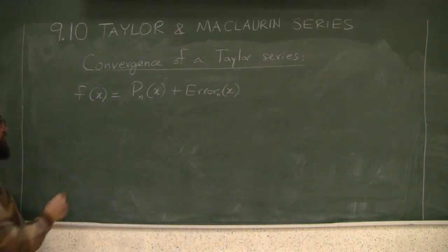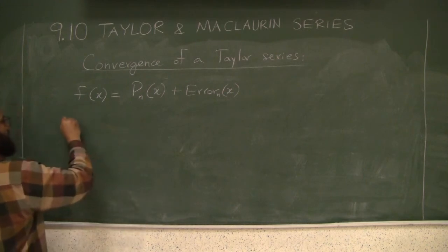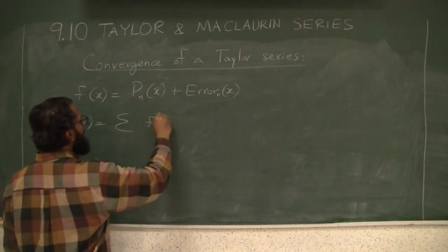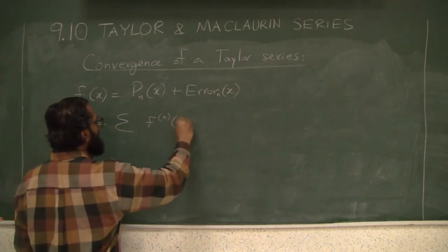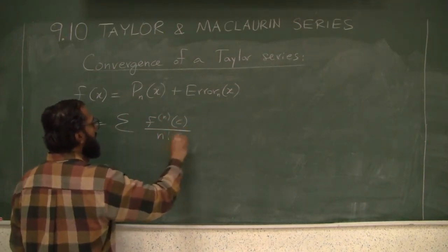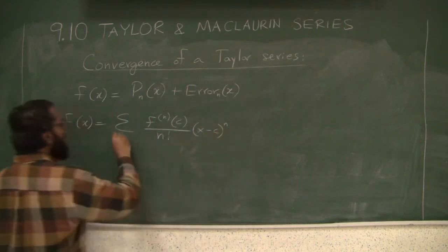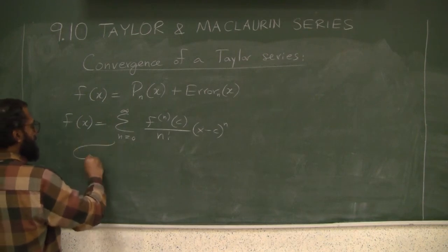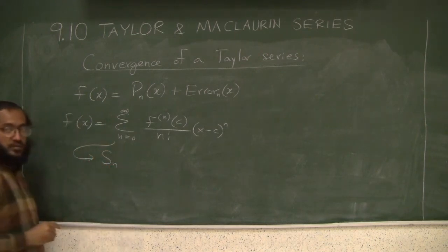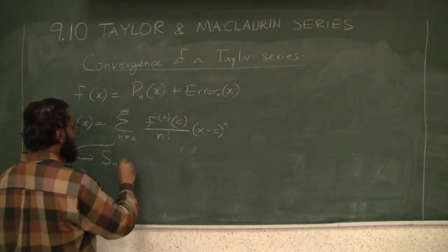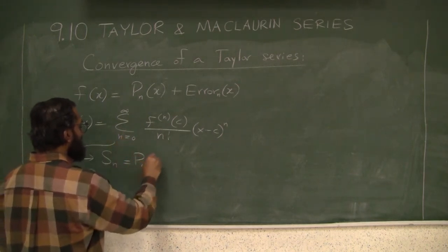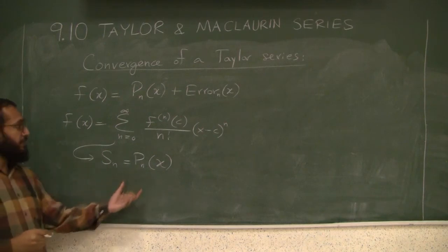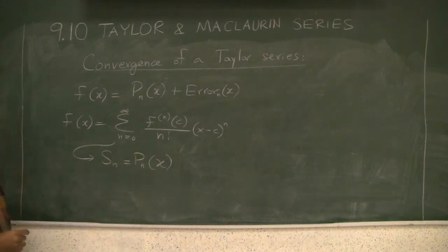Notice that if we have the series, the summation of f^(n)(c) over n factorial times (x minus c) to the n, if we have the series, then the S_n, using the notation of partial sums, the S_n of the series is exactly the P_n, the nth polynomial, the nth degree polynomial, because we stopped at that place.